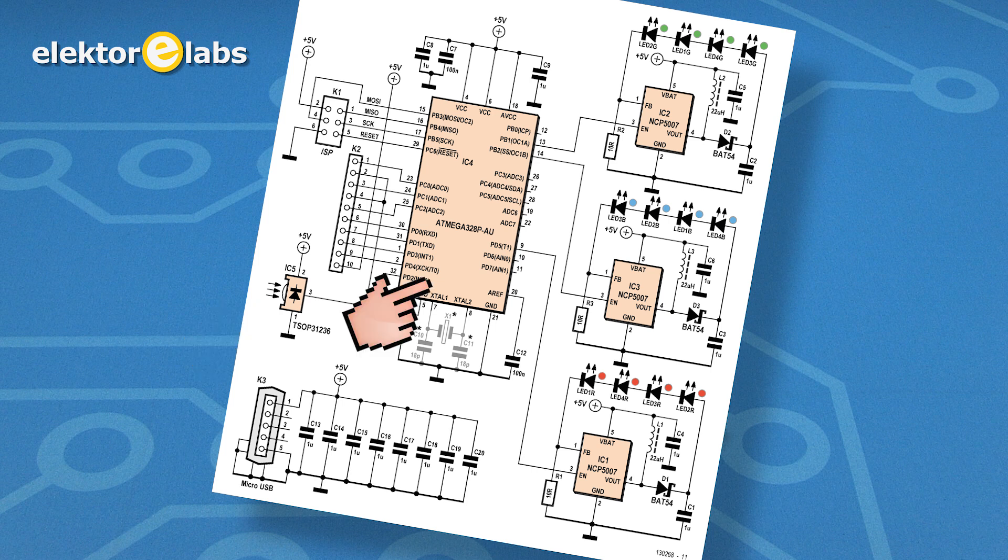An Atmel Atmega328 decodes the IR command messages, converts them into RGB values and outputs them to the hardware PWM pins on the LED boost driver chips.